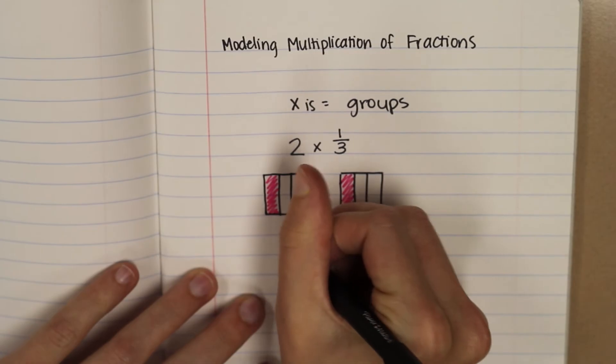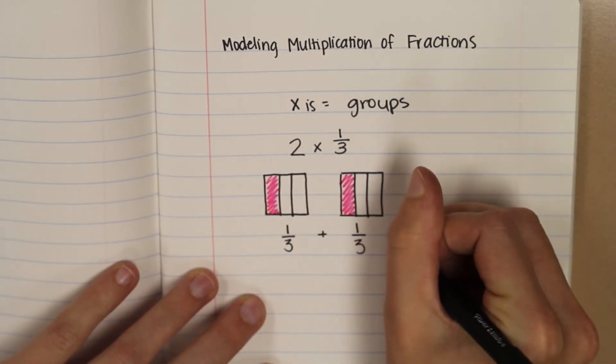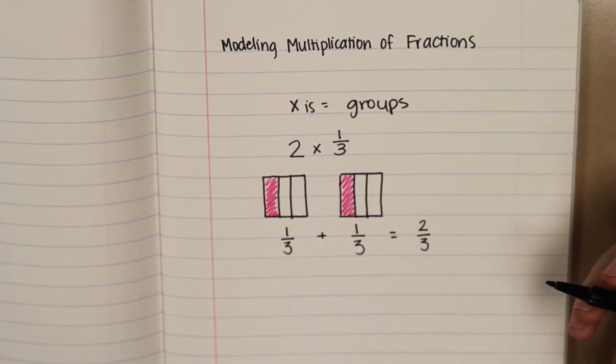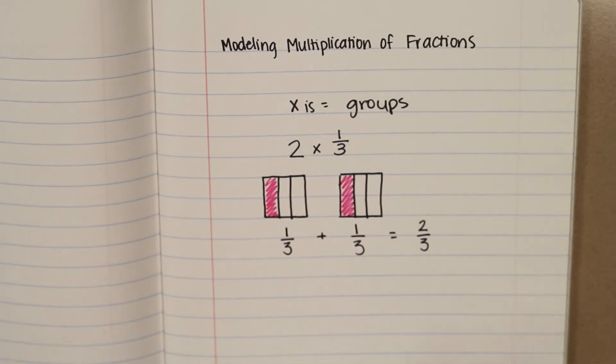And shade one-third. Now we're back to putting unit fractions together. This one-third, this one-third together is two-thirds. This is the answer to two times one-third. You can use repeated addition and these models to solve problems like this.